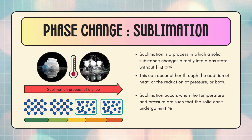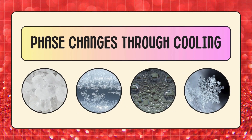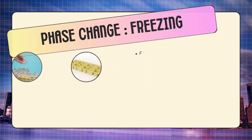Sublimation is a process in which a solid substance changes directly into a gas state without first becoming a liquid. This can occur either through the addition of heat, the reduction of pressure, or both. Sublimation occurs when the temperature and pressure are such that the solid can't undergo melting and instead goes directly into the gas phase.